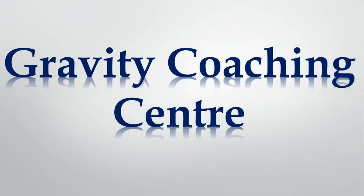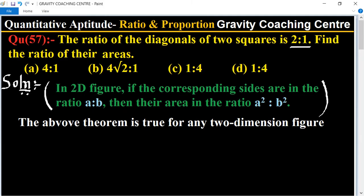Welcome to our channel Gravity Coaching Center. Quantitative Aptitude chapter Ratio and Proportion, question number 57. The ratio of the diagonals of two squares is 2:1. Find the ratio of their areas.